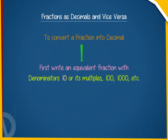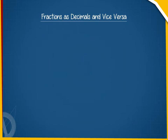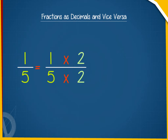For example, 1/5 can be written as (1 × 2) / (5 × 2) = 2/10, which is 0.2.